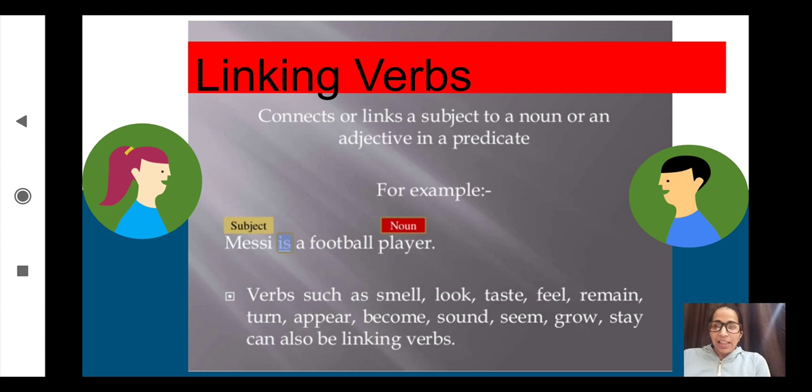Linking verbs work like a link between a subject to a noun or an adjective. In an easy way, you can say that they tell about the state of being. See the example: Messi is a football player. This sentence is talking about Messi, so Messi is the subject here. What is Messi? A football player. 'Is' is actually a linking verb because it's working like a link between Messi and a football player. More examples of linking verbs are already given there.